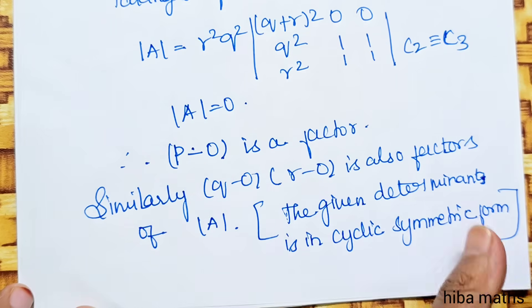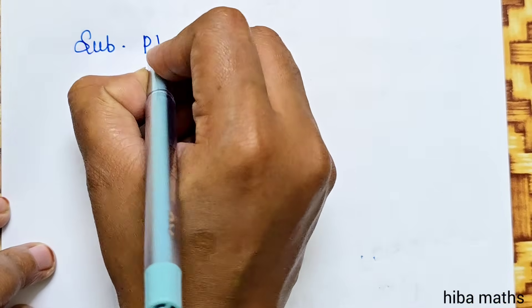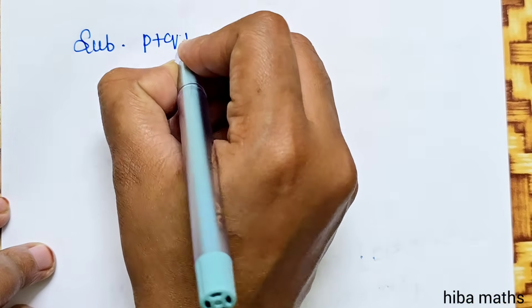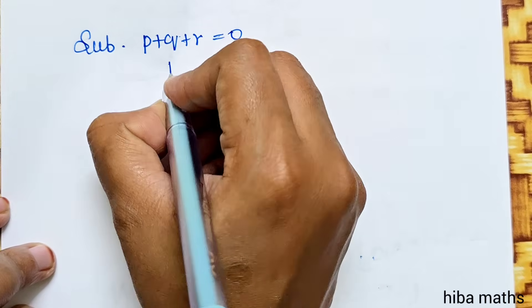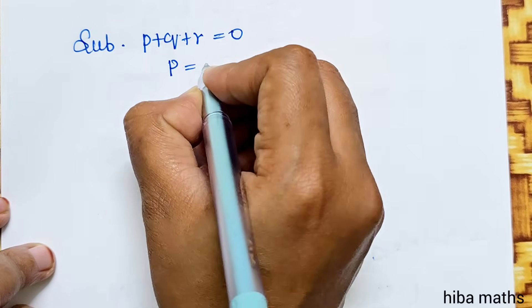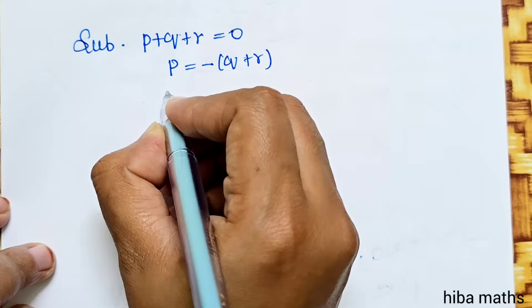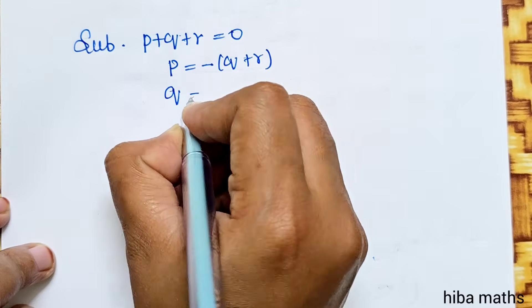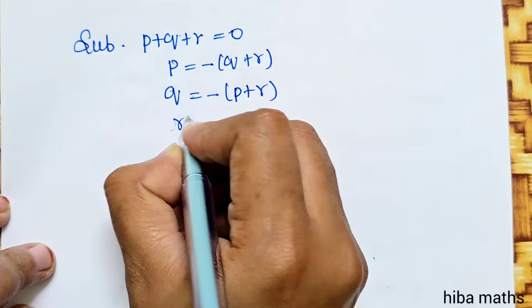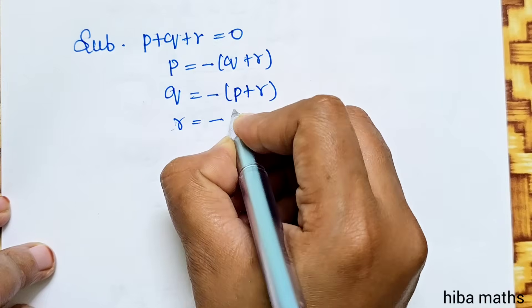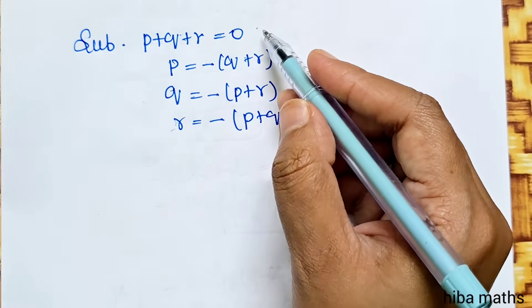Three factors are identified. Substituting PQR equal to 0, P equal to minus (Q+R), Q equal to minus (P+R), R equal to minus (P+Q).